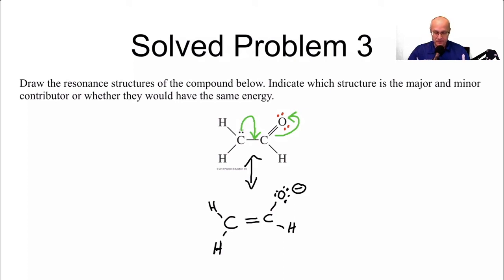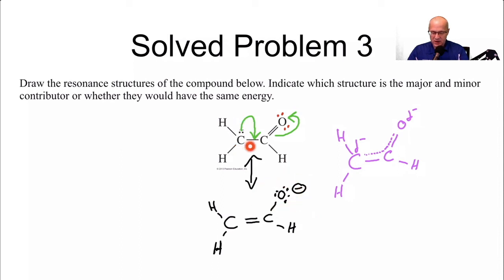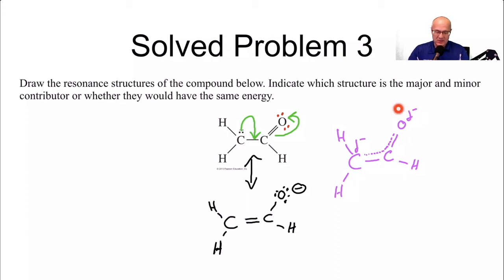In the overall hybrid structure, the most significant contributor is the one where the negative charge is on the oxygen, because oxygen is much more electronegative than carbon and can better accommodate the negative charge. The carbon still has a partial delta negative, but the oxygen bears more of the brunt of that negative charge. Remember, neither resonance form is the correct Lewis structure — the correct Lewis structure is somewhere between them, but we can figure out which is more heavily weighted.